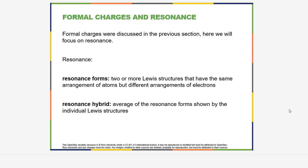What we want to talk about here is resonance, and resonance is a complex subject that we're going to touch on here. There are a few things you need to know about resonance for general chemistry, but resonance is one of those things that the more you study chemistry, the more you learn about it. It actually comes up quite often in organic chemistry. Resonance refers to two or more Lewis structures that have the same arrangement of atoms but different arrangements of electrons.